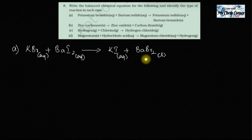I'm not going to list each atom on LHS and RHS as I've already done that in the previous two videos, so if you're still in the learning process please follow those. Here I'll go a little ahead. Potassium: one on the left, one on the right — that's okay. Bromine: one on the left, two on the right, so I'll put a 2 in front of KBr. Now barium: one on both sides. Iodide: one on the right, two on the left, so putting 2 in front of KI balances both potassium and iodine.